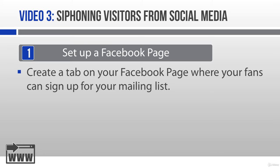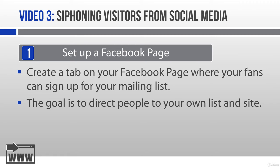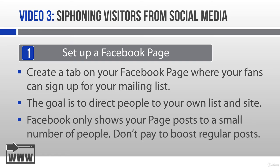Most of the bigger third-party email service providers, like AWeber, make this really easy by providing an app for this. Check with your own ESP for specific instructions on how to include an opt-in form on your Facebook page. While it's great to chit-chat with your prospects on Facebook, what you really want to do is siphon them off Facebook to your own mailing list and website — that way you control your traffic. Another good reason is that Facebook only shows your page posts to a small number of your fans, and if you want all your fans to see your post, you need to pay Facebook to boost it.